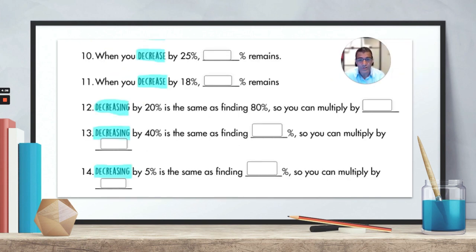Now for these questions, you need to look at decrease. So again, I recommend you pause the video and you do the questions now. Okay, so I hope these were not too difficult and you found those okay. So for the first one, to decrease by 25%, that means 75% remains. For the second question, to decrease by 18%, that means you're left with 82%. So well done if you found those ones.